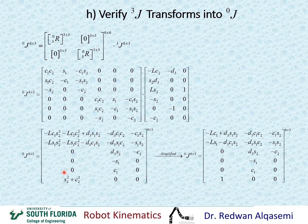The reason it looks different is that some elements can be simplified. For example, we have sine squared plus cosine squared of theta 2, which simplifies to 1. Similarly, looking at the first element, we have sine squared and cosine squared of theta 2 both pre-multiplied by negative LC1. Taking negative LC1 as a common factor, S2² + C2² = 1, leaving negative LC1.